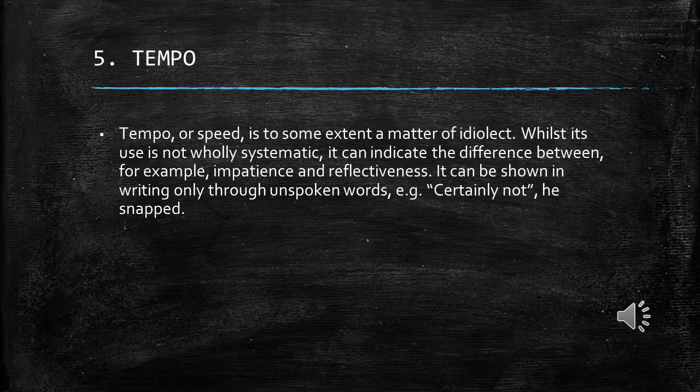Fifth, tempo or speech rate: It is to some extent a matter of idiolect. Whilst its use is not wholly systematic, it can indicate differences between, for example, impatience and reflectiveness. It can only be shown in writing through descriptive words, for example 'curtly' or 'his name.'